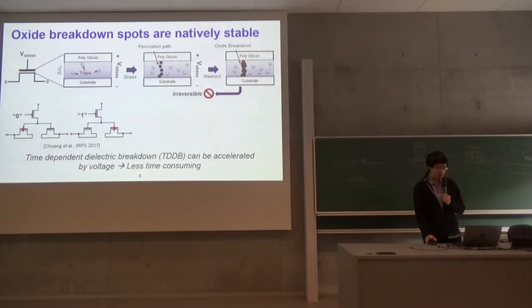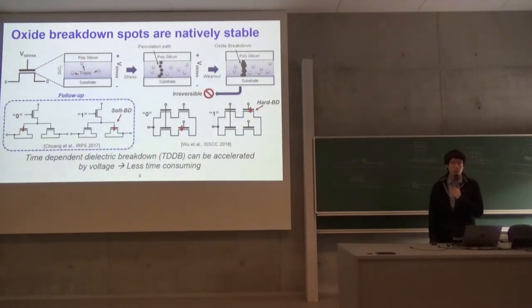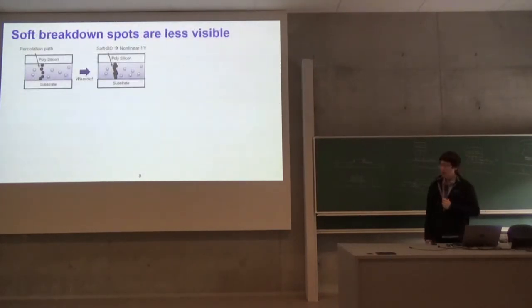We already proposed this PUF circuit using oxide breakdown last year. There's another paper using a similar concept published this year, but there's a difference: our design uses soft breakdown and the other uses hard breakdown. This work is a follow-up of our previous work. Why are we interested in using soft breakdown? There's a concern that we might visually see the breakdown spots, so we're going to show that soft breakdown spots are less visible than hard breakdown.